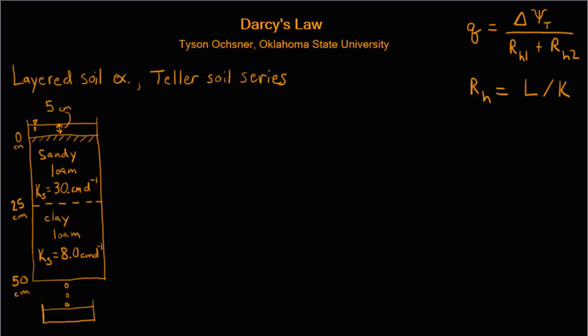So the calculation procedure will be for us to calculate these two hydraulic resistances that we need for each layer, and then to calculate the flux Q, and then we can also determine the pressure potentials at point A the soil surface, at B the interface between the layers, and C at the bottom. So let's begin.